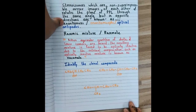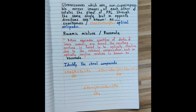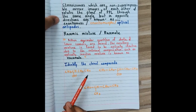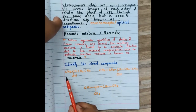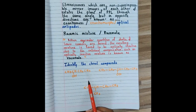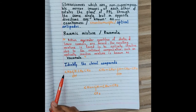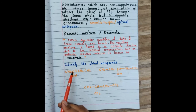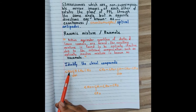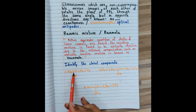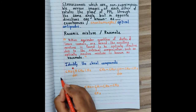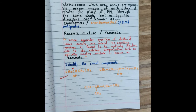Let's check comprehension by identifying optically active compounds. First, butane-2-ol: CH₃CH(OH)CH₂CH₃. The first carbon CH₃ has three hydrogens — not chiral. The second carbon is attached to H, OH, a methyl group on one side, and an ethyl group on the other — four different groups — so it is a chiral carbon. Therefore butane-2-ol is an optically active compound.